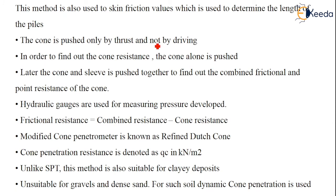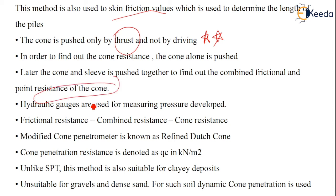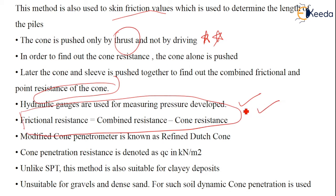This method uses skin friction values to determine the length of piles. The cone is pushed only by thrust, not by driving — this is very important. To find cone resistance, the cone alone is pushed first; then the cone and sleeve together to find the combined frictional and point resistance. Hydraulic gauges measure the pressure developed, and frictional resistance is calculated as combined resistance minus cone resistance. The modified cone penetration, also known as the refined Dutch cone, has penetration resistance denoted as QC in units of kN/m². Unlike SPT, this method is also suitable for clay deposits.